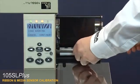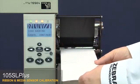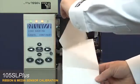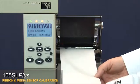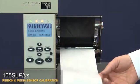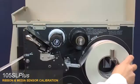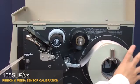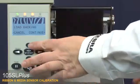Remove the labels from about 8 inches or 200 millimeters of the liner. Pull the media back into the printer so that only the liner is between the media sensors. Press plus to continue.